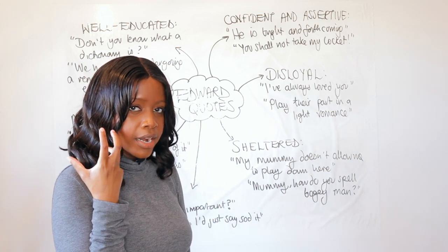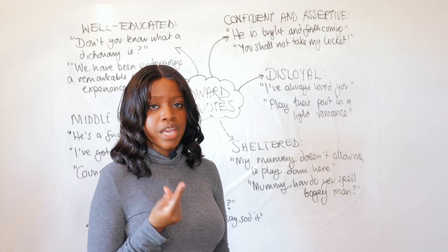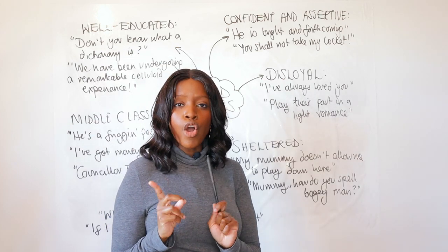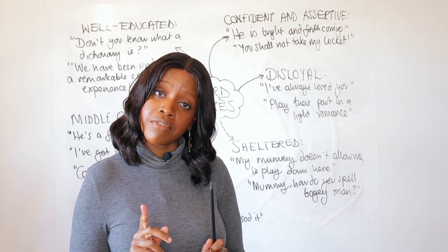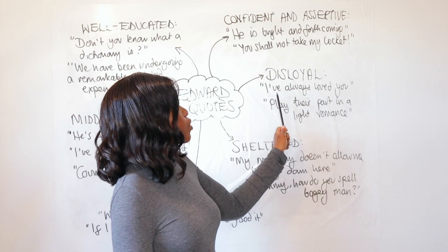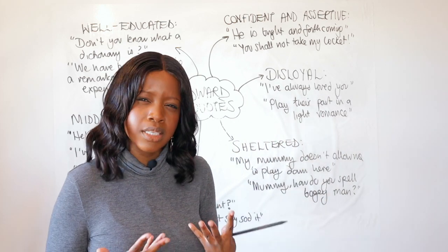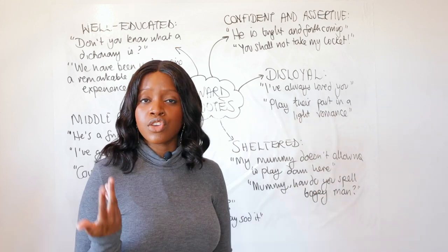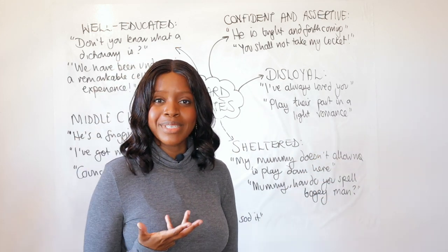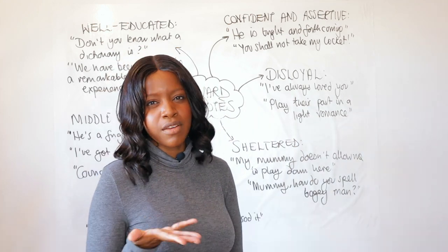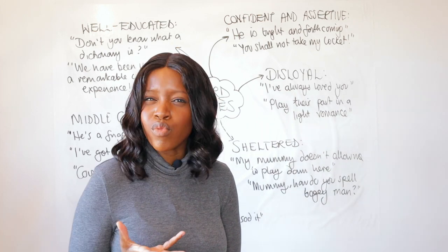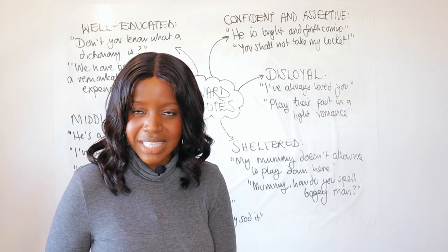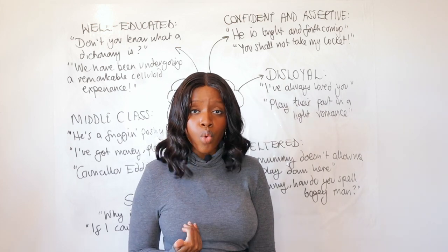Another aspect of Edward's character is that, unlike Mickey who is quite loyal and sees Edward as a blood brother, Edward forgets this loyalty. Linda is the person Edward really falls for — they both fall for her. Whilst Mickey does marry Linda, Edward never loses hope for a love to be kindled between them, and they end up having an affair behind Mickey's back. Edward confesses to Linda 'I've always loved you.' They play their part in what is called 'a light romance' — a euphemism for an affair — showing that Edward isn't at all loyal to Mickey.